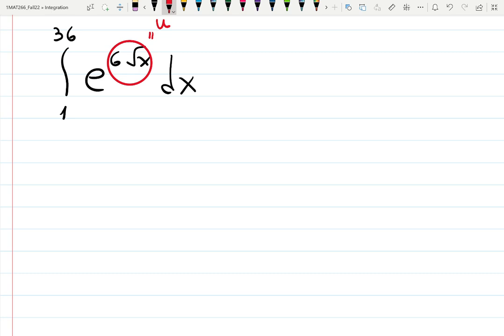The whole point of u-substitution is to make something easier. If u is 6 times square root of x, then du will be 6 times one half times x to the minus one half, or 6 over 2 times square root of x.